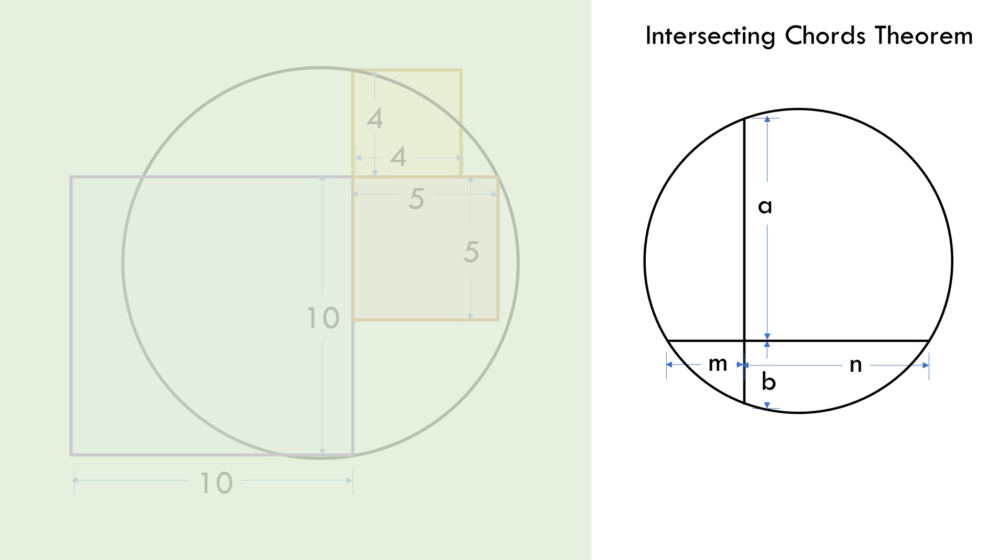The intersecting chords theorem gives the relationship between these four line segments. It states that the products of the lengths of the line segments on each chord are equal. That is, a times b equals m times n.